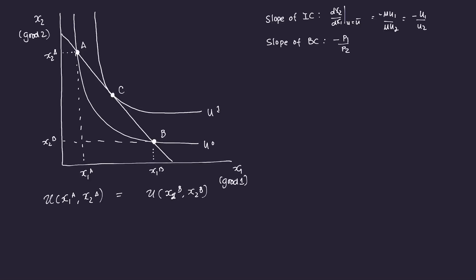Our lesson today is about utility maximization, and to illustrate the first-order conditions, we need to learn about slopes. The slope of the indifference curve is given as the negative of the marginal utility of good one over the marginal utility of good two. It's negative because the indifference curves are downward sloping. Similarly, the slope of the budget constraint is the negative of the price ratio — negative P1 over P2 — because the budget constraint is also downward sloping.